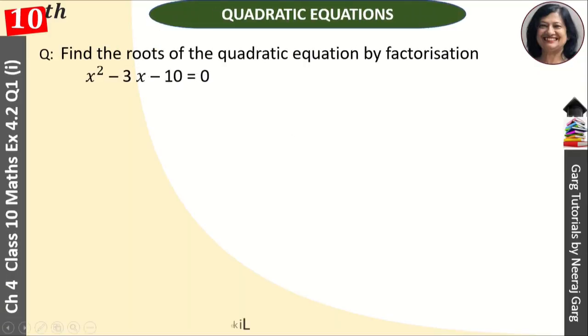Hi, this is Neeraj Garg and you are watching class 10th chapter 4, Quadratic Equations. Find the roots of the quadratic equation by factorization: x square minus 3x minus 10 is equal to 0.